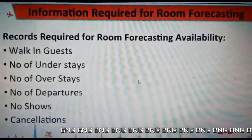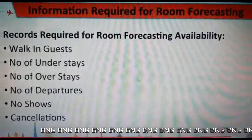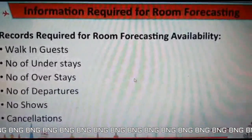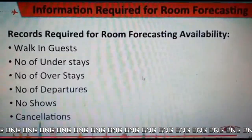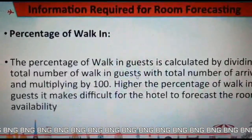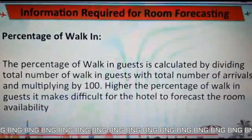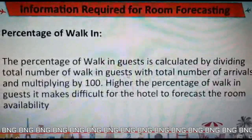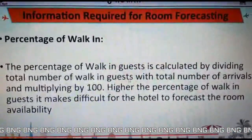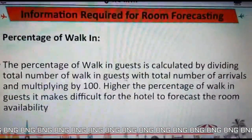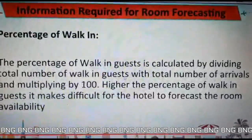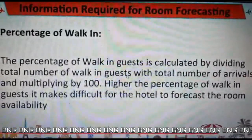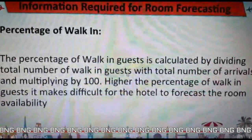Now, suppose we need percentages for calculation. We take the percentage of walk-in guests by dividing the total number of walk-in guests by the total number of arrivals and multiplying by 100. Simple mathematics. The higher the percentage of walk-in guests, the more difficult it is for the hotel to forecast room availability.